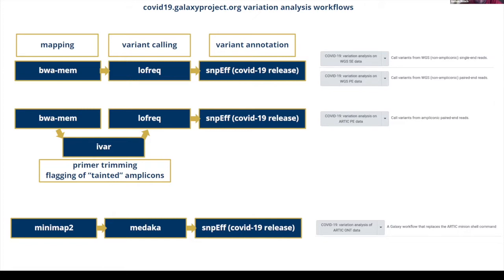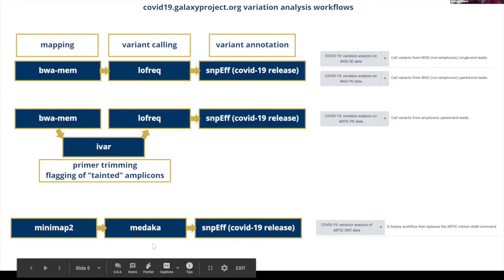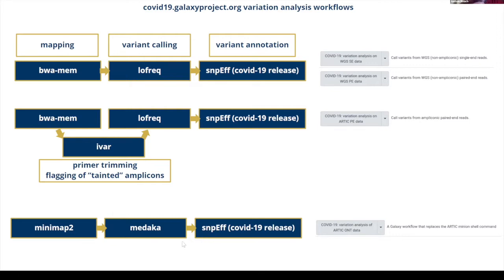I'm going to be talking primarily about the Oxford Nanopore data today. For alignment and variant calling for this workflow, we used Minimap2 and Medaka respectively. Minimap2 is the gold standard long-read aligner at the moment, and Medaka is a very good variant caller for long reads, in particular for Oxford Nanopore data. It is a neural net-based variant caller that operates on the alignments directly.